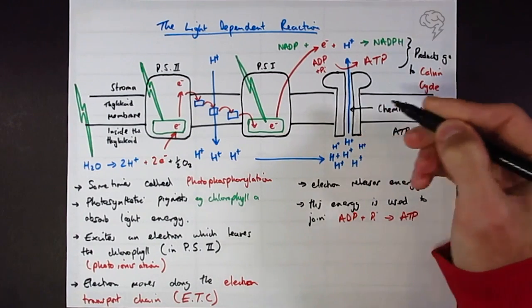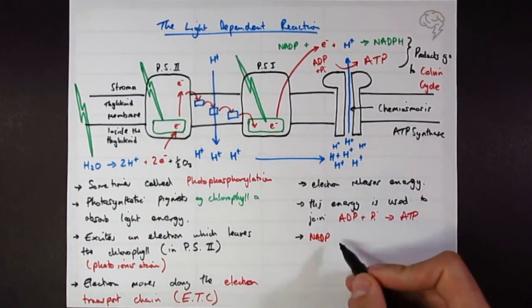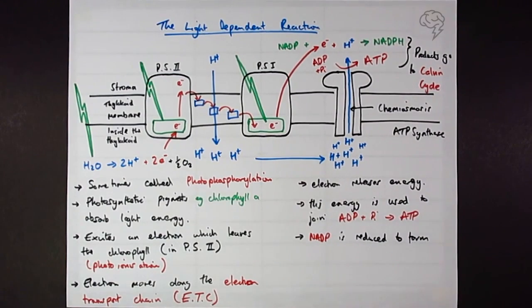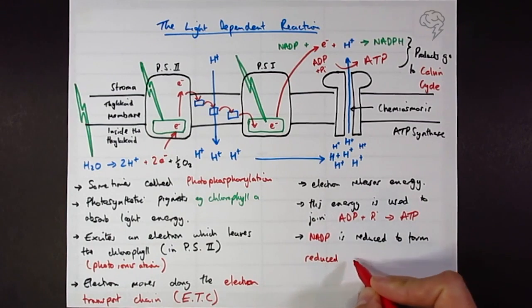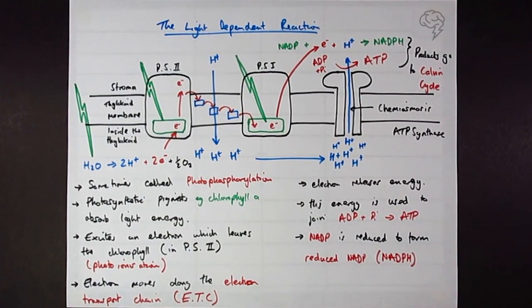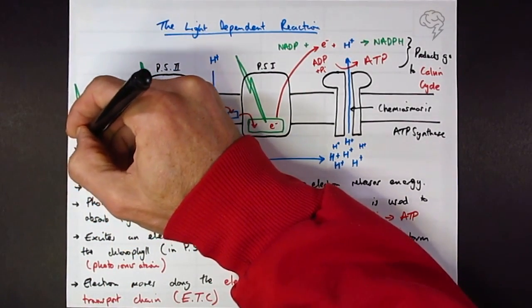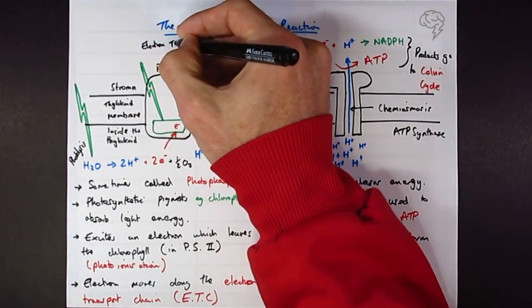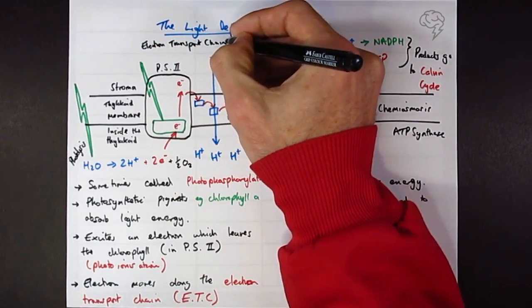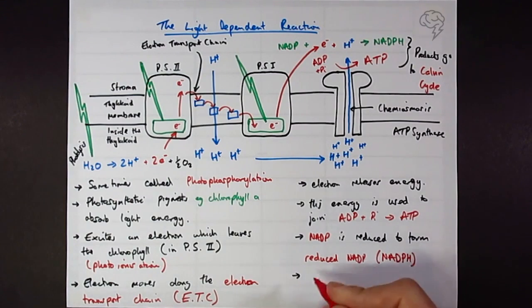What are the other products? We should definitely mention the other products of the light-dependent reaction. We can say that NADP is reduced to form reduced NADP. I'm actually going to write it for once: reduced NADP, which I'm pretty much always going to write as NADPH. This is accepted on the exam. And then the last bit that we haven't mentioned over here - this is called photolysis. This is also the electron transport chain. And we can say photolysis of water produces protons, electrons, and oxygen. And that is it.